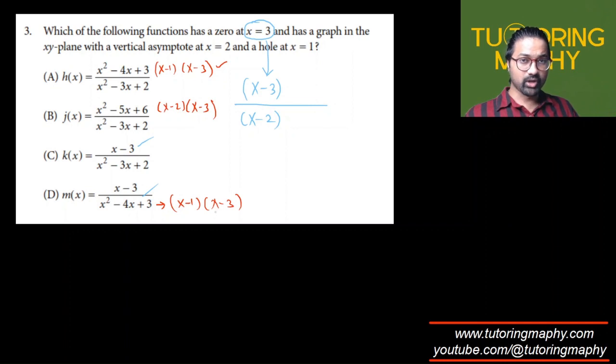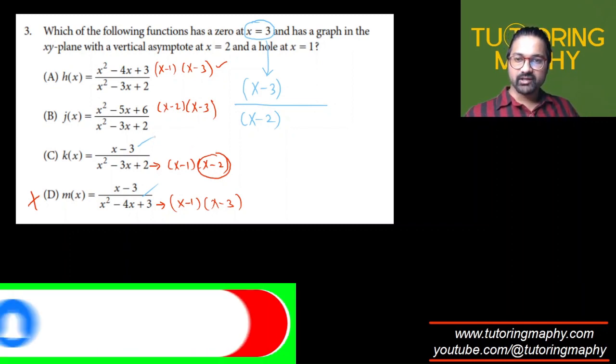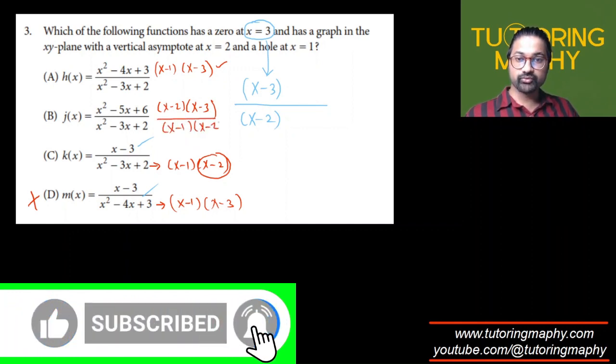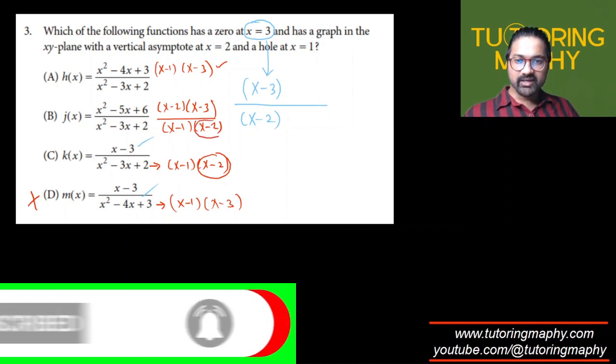So this is not possible. Can it be this (x - 1)(x - 2)? Yes, it can be this because there is an (x - 2) at the bottom and the numerator does not have any (x - 2), so it is a vertical asymptote. Likewise, this is (x - 1)(x - 2).